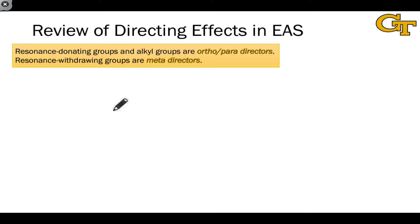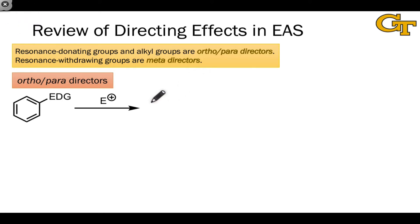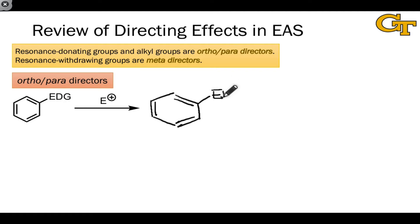Let's quickly review the directing effects of different types of substituents in electrophilic aromatic substitutions. This is something that should permeate your thinking as you're working with aromatics in synthesis and predicting the products of reactions. We've seen that groups that are electron-donating by resonance are ortho-para-directors. This means that when we react an electrophile with a substituted benzene bearing an electron-donating group, we should expect the electrophile to bond to the ortho position with respect to that group, as well as the para position.